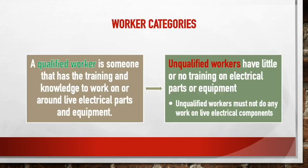There are two categories of workers, similar to lockout tagout. A qualified electrical worker is someone who has training and knowledge to work on or around live electrical parts and equipment — they've typically attended NEC courses and have a journeyman's license. It's not something you become overnight by taking an online test; there's specific training required. Unqualified workers are pretty much everyone else who has not received that training.